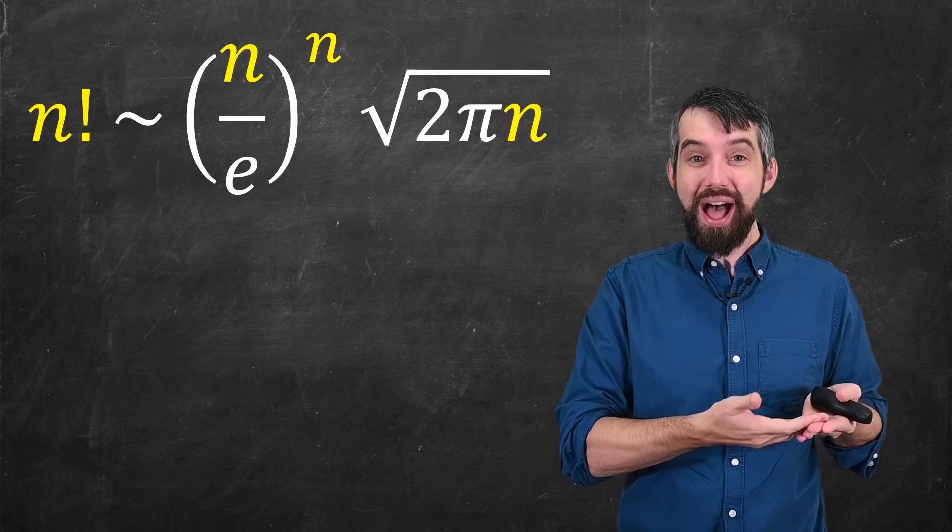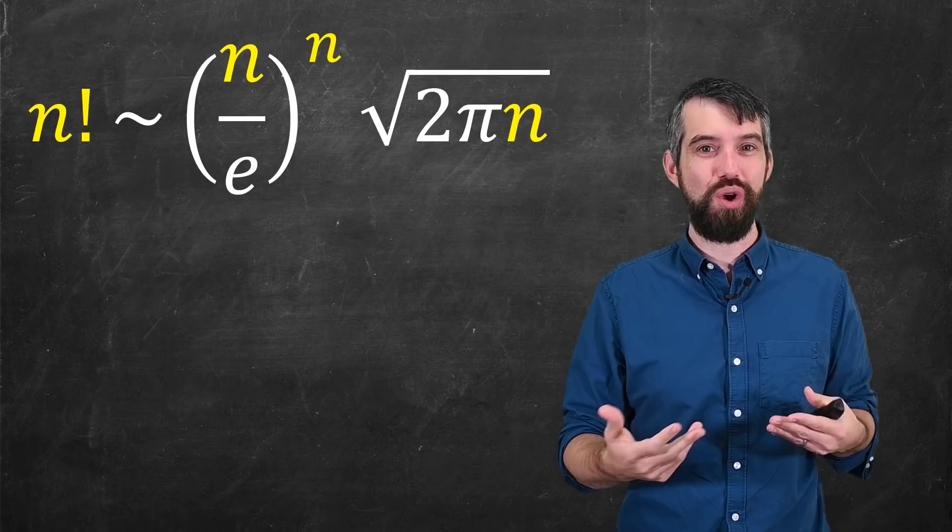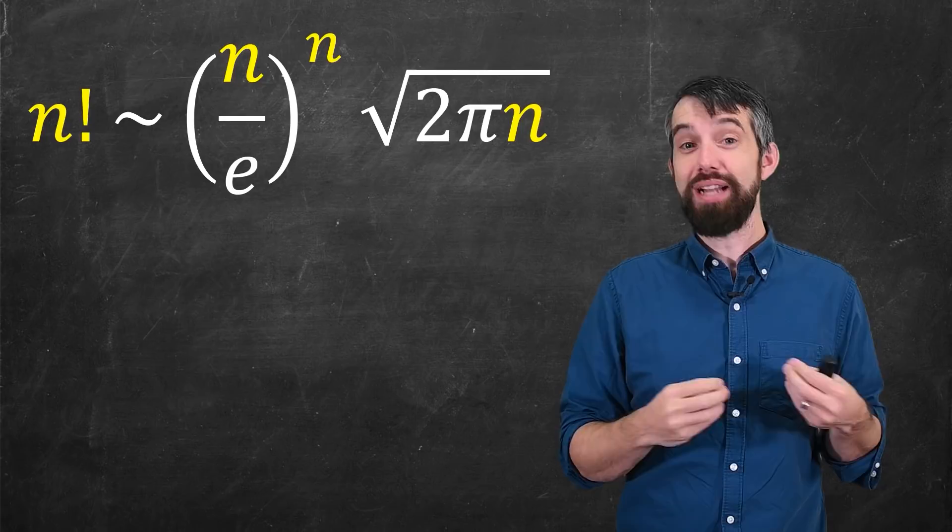But in the right-hand side of this, you've got e's, you've got square roots, you've got pi's floating around, and you're like, hold on, why is there a pi there? What's the circle in this scenario? And so it's somewhat surprising that this really works to be such an effective approximation.